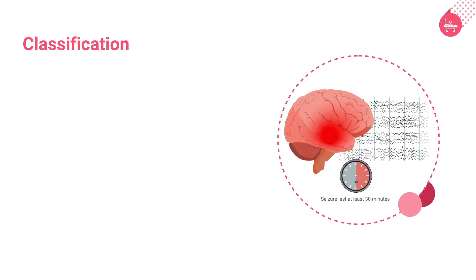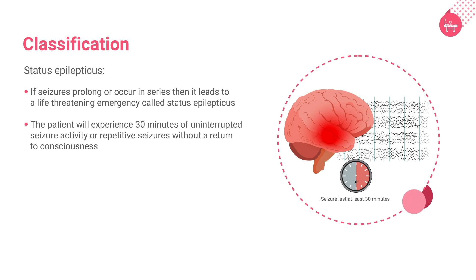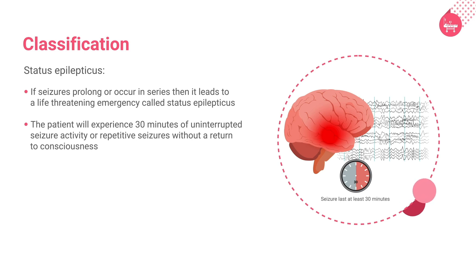The major classification also includes status epilepticus. Prolonged seizures, or a series of repetitive abnormal neuronal firing, leads to a life-threatening emergency called status epilepticus. The patient will experience 30 minutes of uninterrupted seizure activity without a return to normal consciousness.